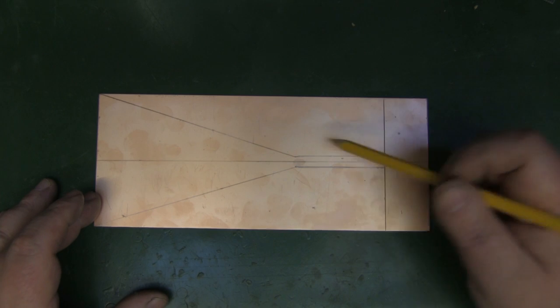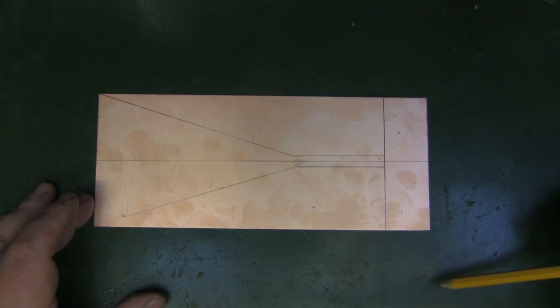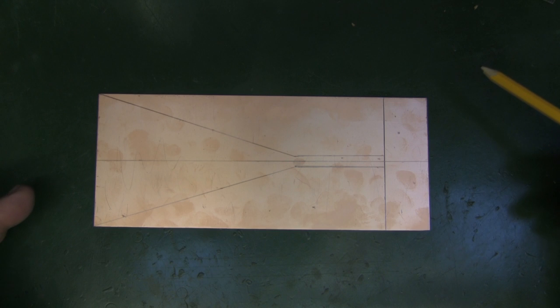So now that I've got it marked out I'm going to cut all this out with the bandsaw. You can also use a jigsaw or even a dremel tool with a cutting wheel.